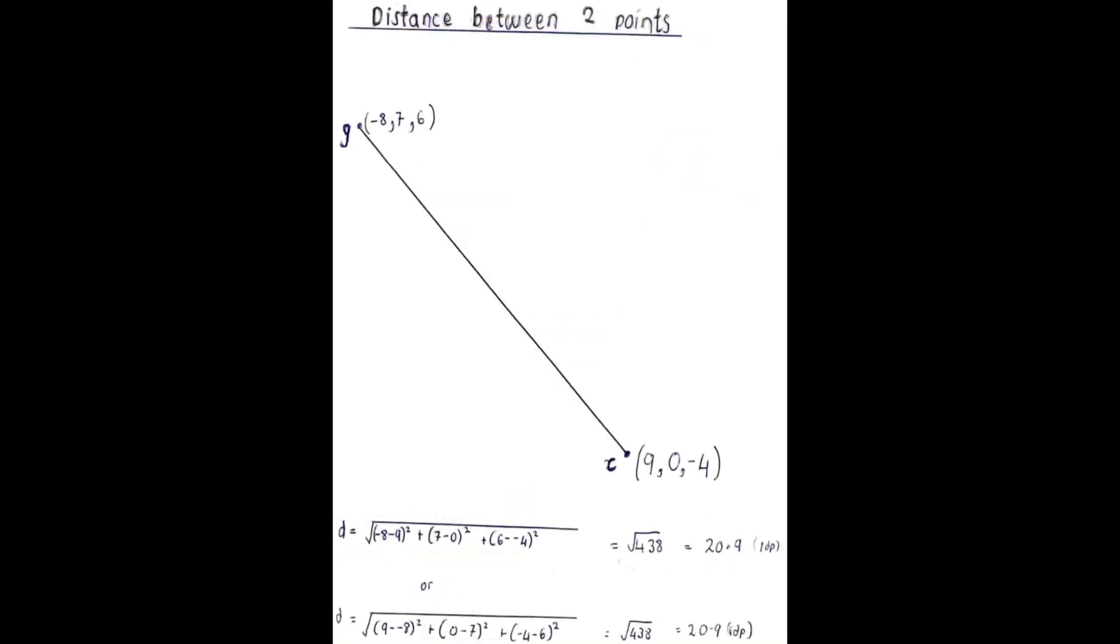To find the distance between the two points g and c with these coordinates, you'd use a method similar to finding the magnitude of a vector. You find the difference between the coordinates of g and c, square the differences, add them up and finally square root them as shown here.